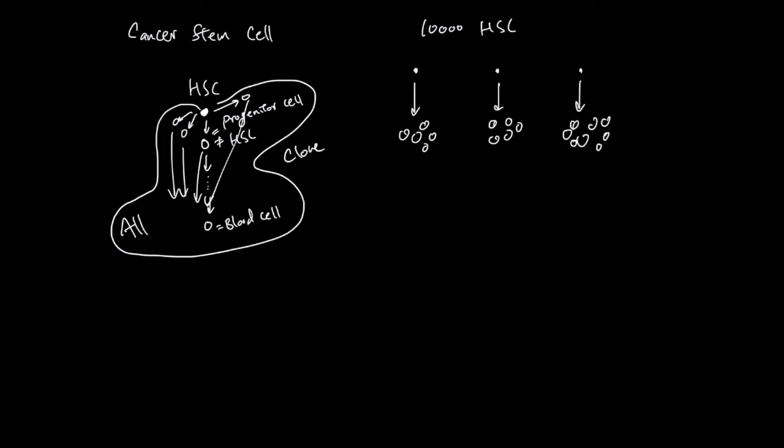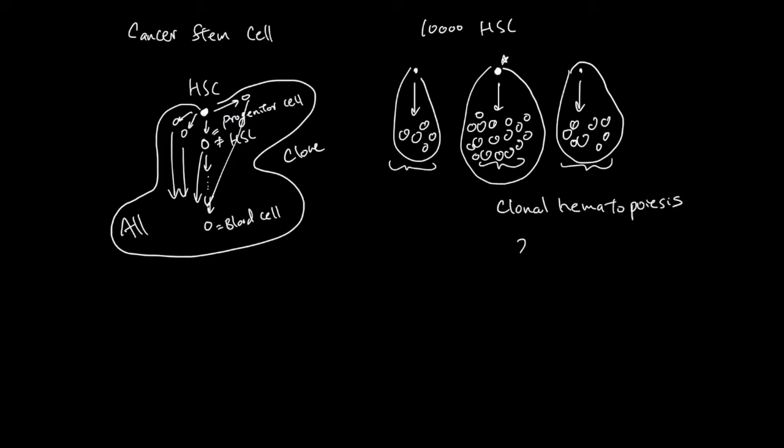In a healthy individual, the size of these clones is usually balanced. But sometimes a stem cell can get some kind of growth advantage, maybe from a mutation or its niche being a little bit better. Whatever the reason, this stem cell can now make more blood cells. Overall, this clone is going to be larger than the other clones. This is called clonal hematopoiesis. The clone can be anywhere between 2% of all blood cells all the way up to 100%, where just one hematopoietic stem cell makes all the blood cells.